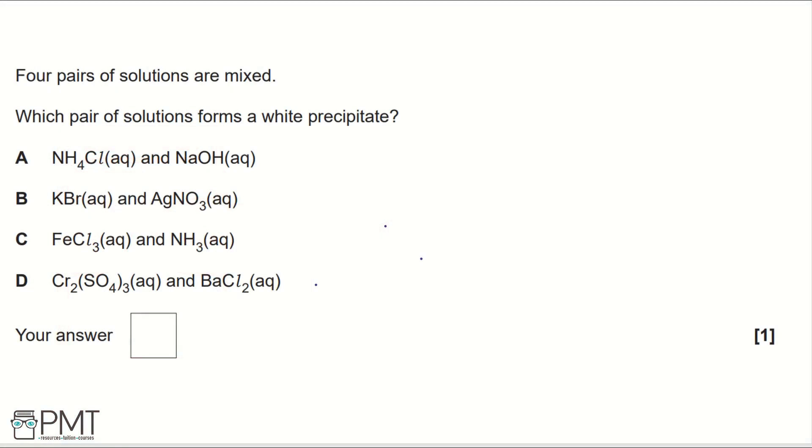Four pairs of solutions are mixed. Which pair of solutions forms a white precipitate? A. NH4Cl aqueous and NaOH aqueous.